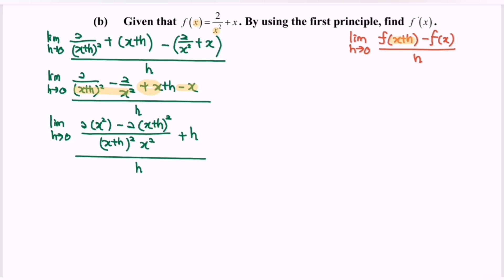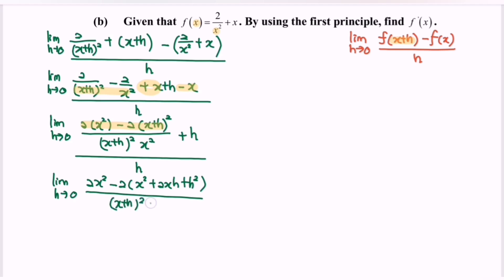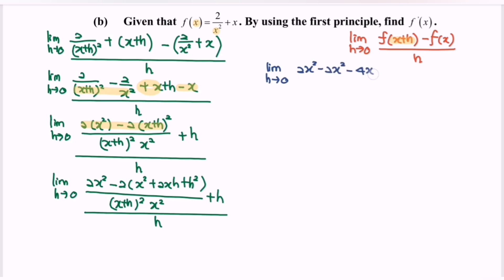Next, kindly focus on this part. Limit when h approaching 0, we will have 2x squared minus 2 times (x squared plus 2xh plus h squared), over h. Rewriting the situation: limit when h approaching 0, 2x squared minus 2x squared minus 4xh minus 2h squared, over (x plus h) squared multiplied with x squared, plus h over h.